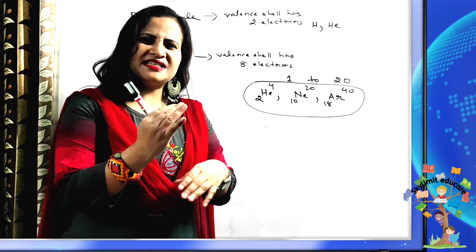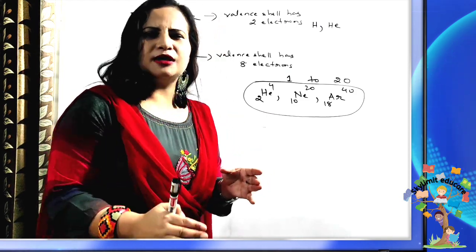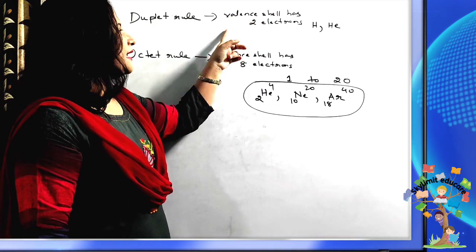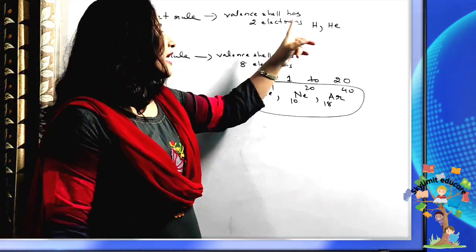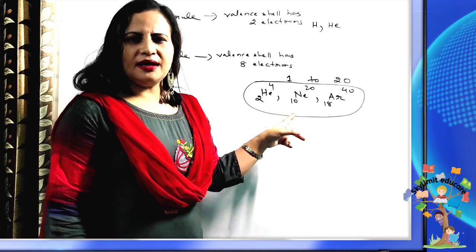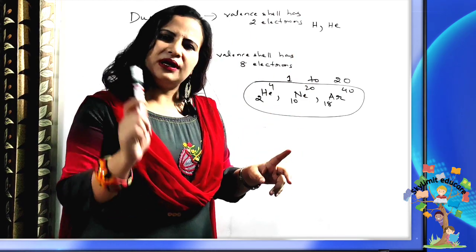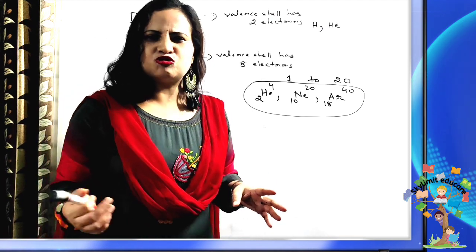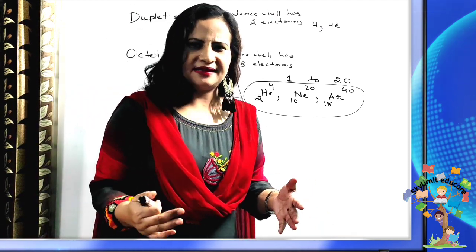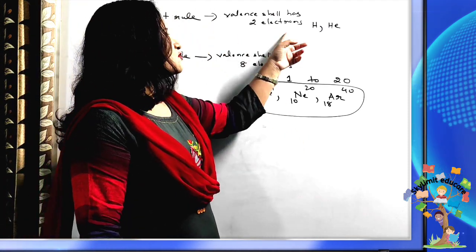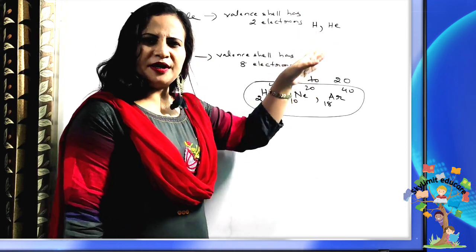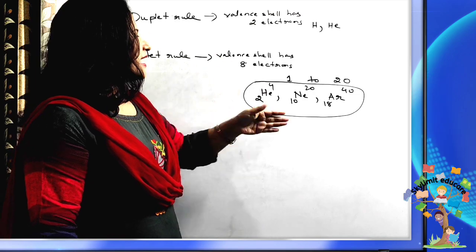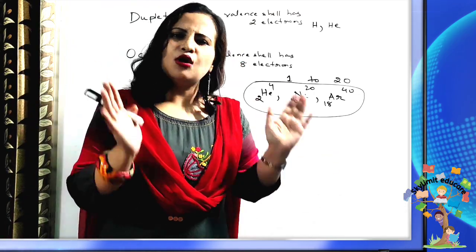It is the goal of every atom to become stable. When atoms attain either 2 electrons in the outermost shell — the duplet rule, applicable only for hydrogen and helium — or 8 electrons in the outermost shell — the octet rule — they are considered stable. For example, calcium has 2 electrons in its outermost shell but is not stable, so the duplet rule does not apply to it.